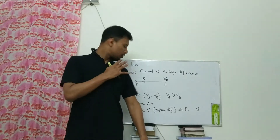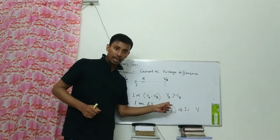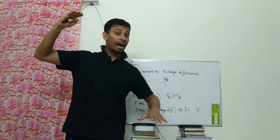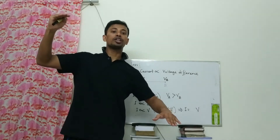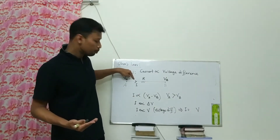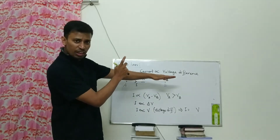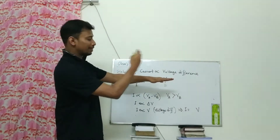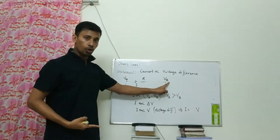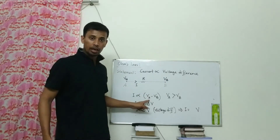Why have I written VA minus VB instead of VB minus VA? Because VA is greater than VB. As we know, current flows from higher potential to lower potential. If you look at the arrow sign, it indicates the direction of current flow — current is moving in that direction. So this side should be higher potential and that side lower potential. Therefore VA is the higher potential and VB is the lower potential, so it's definitely VA minus VB.